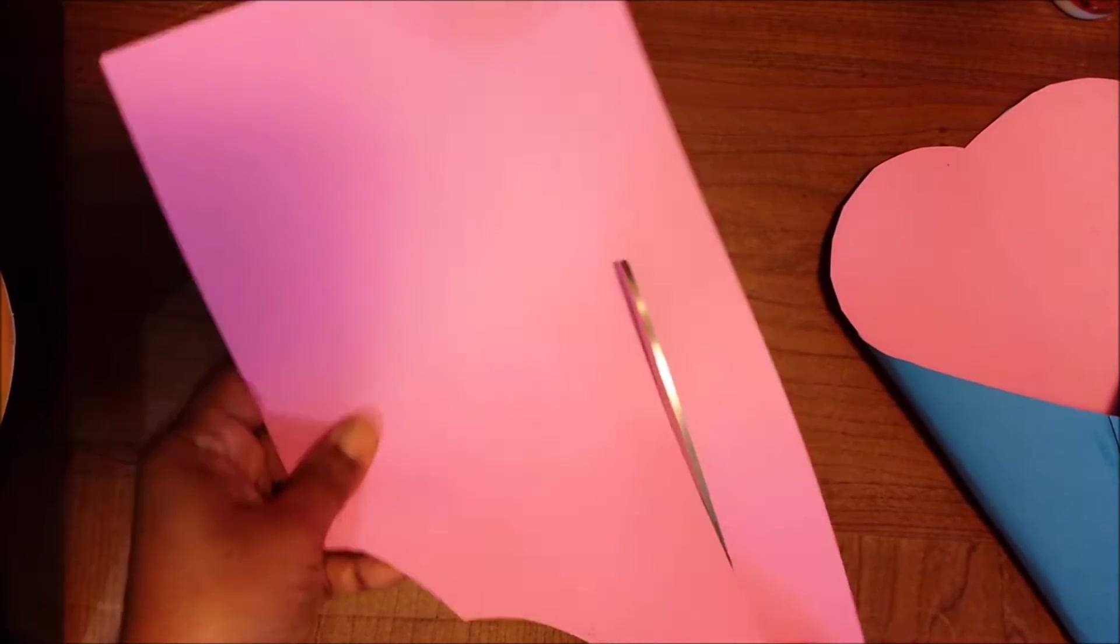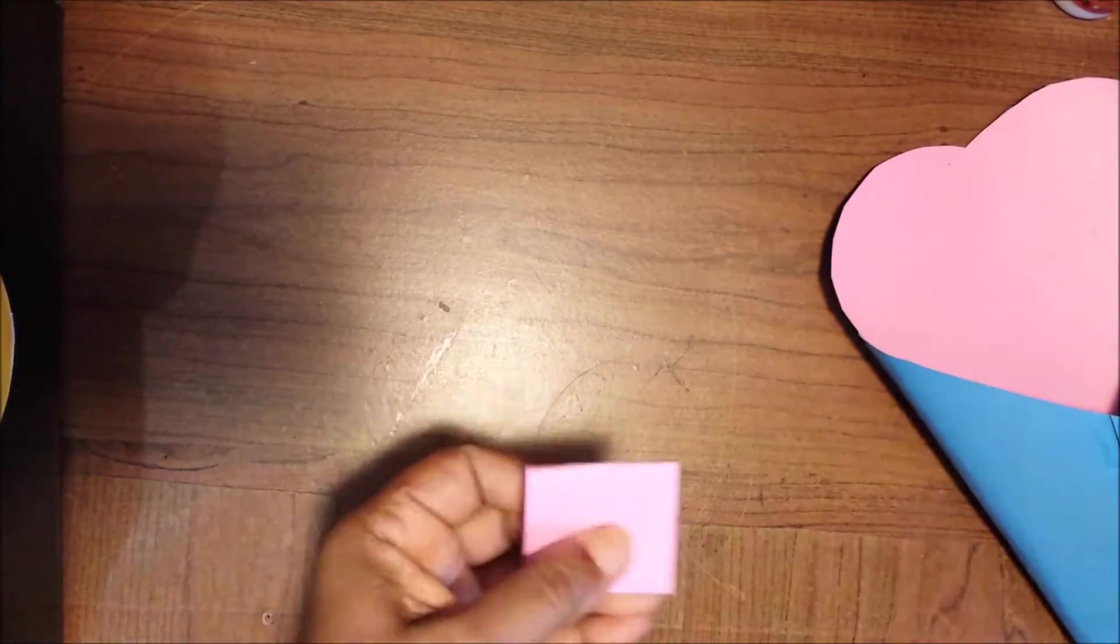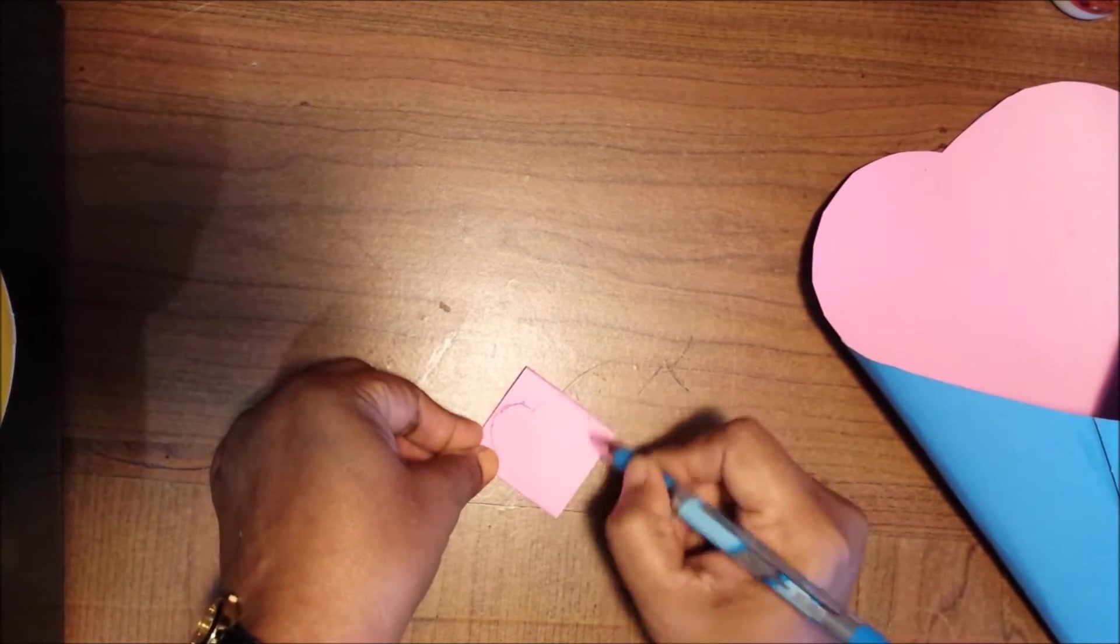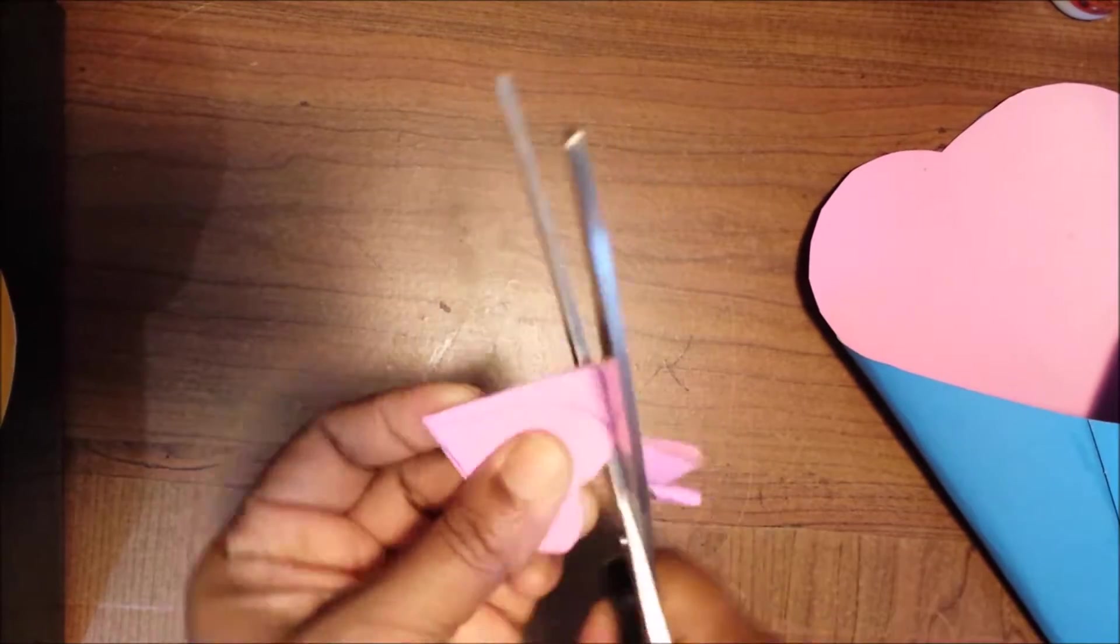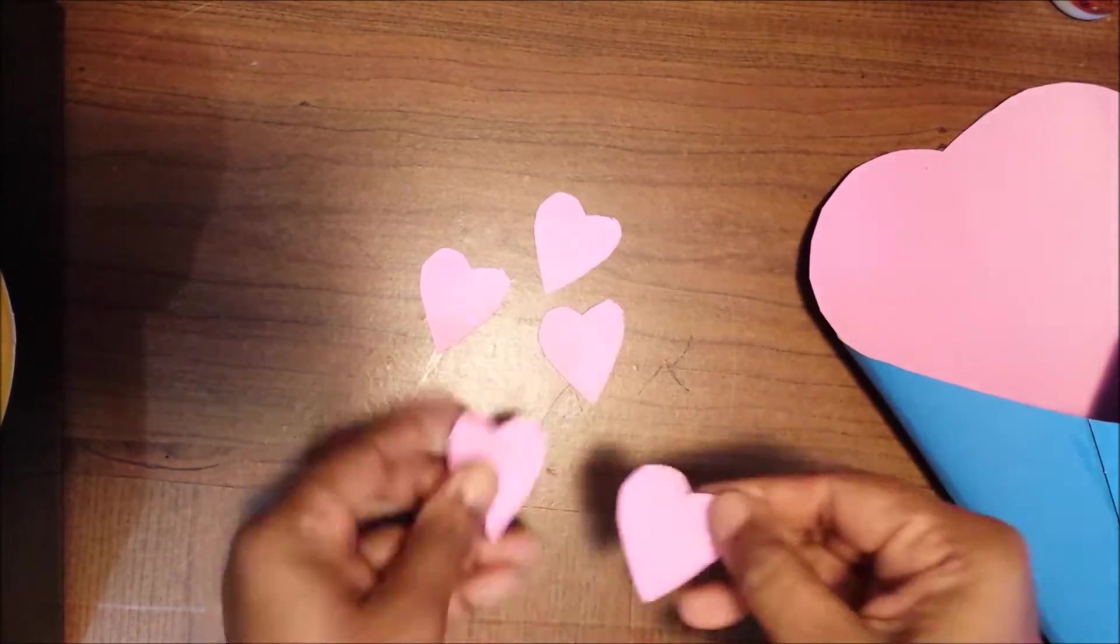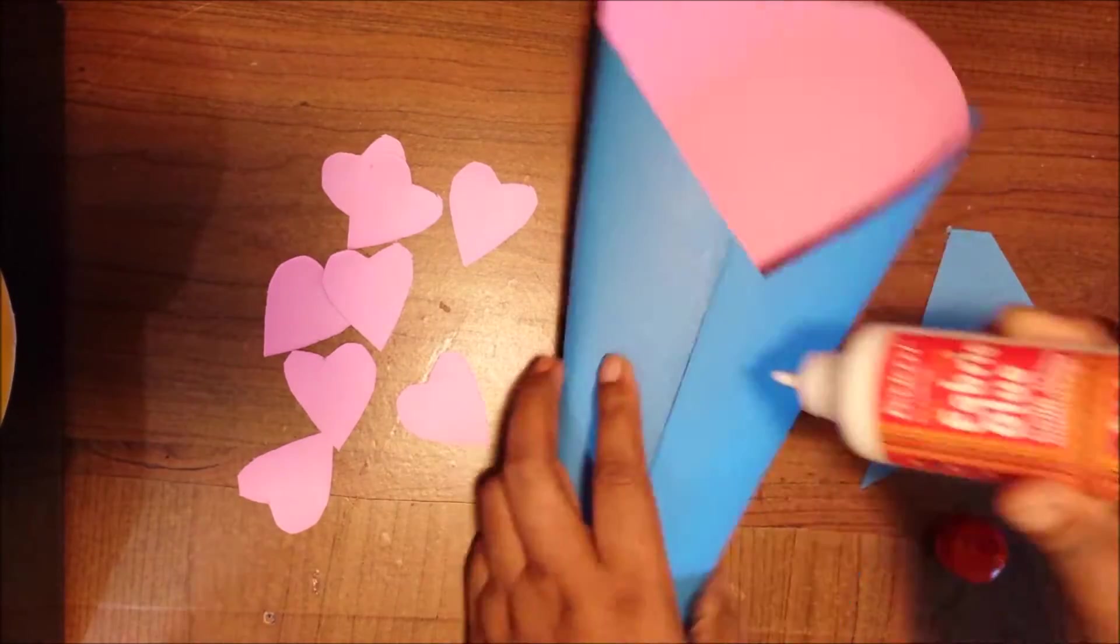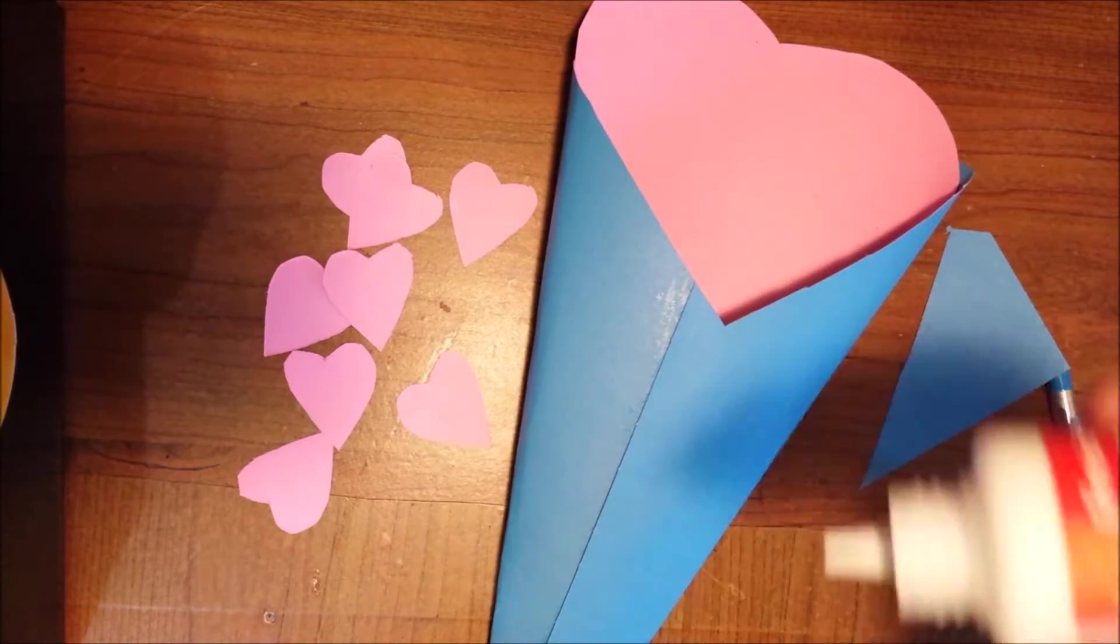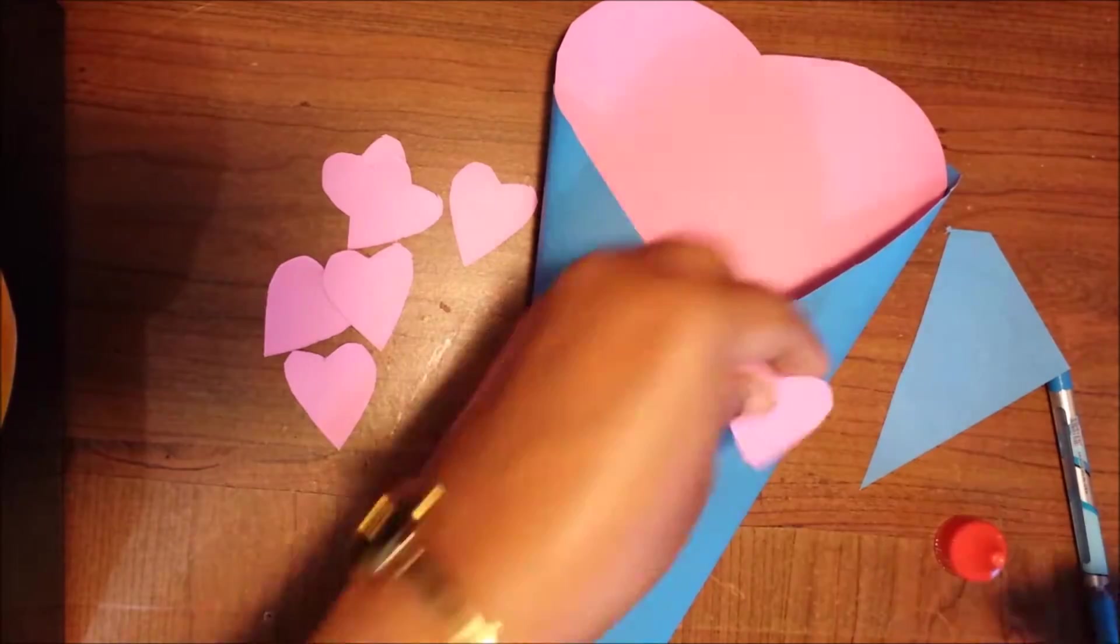Then take other paper. Here, take the measurement of the heart, then cut it wherever you want to stick it on the cone, whatever direction you want to keep it, just for decoration.